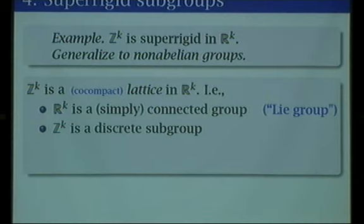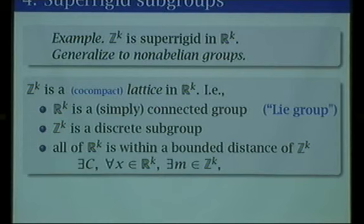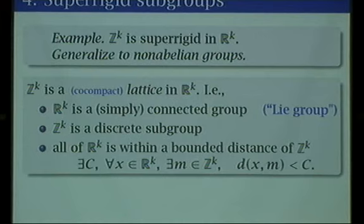The lattice property: there are lots of discrete subgroups of groups, but the key lattice property is that every element of RK is just a bounded distance from some element of the subgroup. There's some number C — in fact maybe 2 to the K is plenty big enough — so that every element of RK is within that distance of some element of ZK. That's what a co-compact lattice is. The lattice is a discrete subgroup, so it obviously can't be the whole group, but it's filling up the whole space — it goes everywhere. There's no part of the space that it's missing. It comes within a bounded distance of every point.